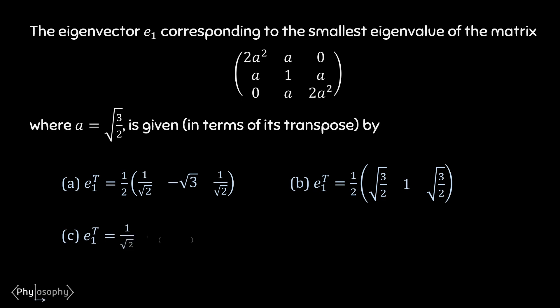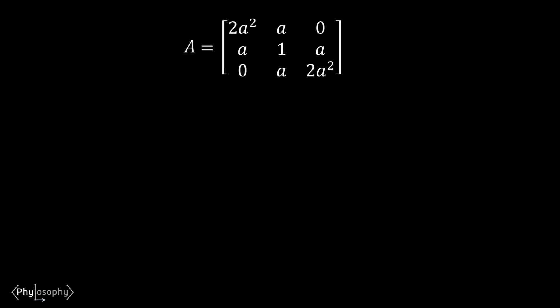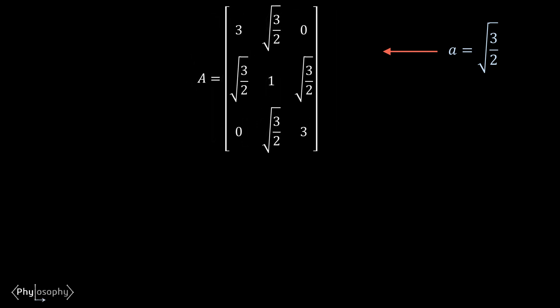If you want, you can pause this video and give it a try, then continue. To solve this problem, let us denote the given matrix by capital A. Putting the value of a = √3/2 into the matrix, A becomes the matrix whose elements are 3, √3/2, 0, √3/2, 1, √3/2, 0, √3/2, and 3.